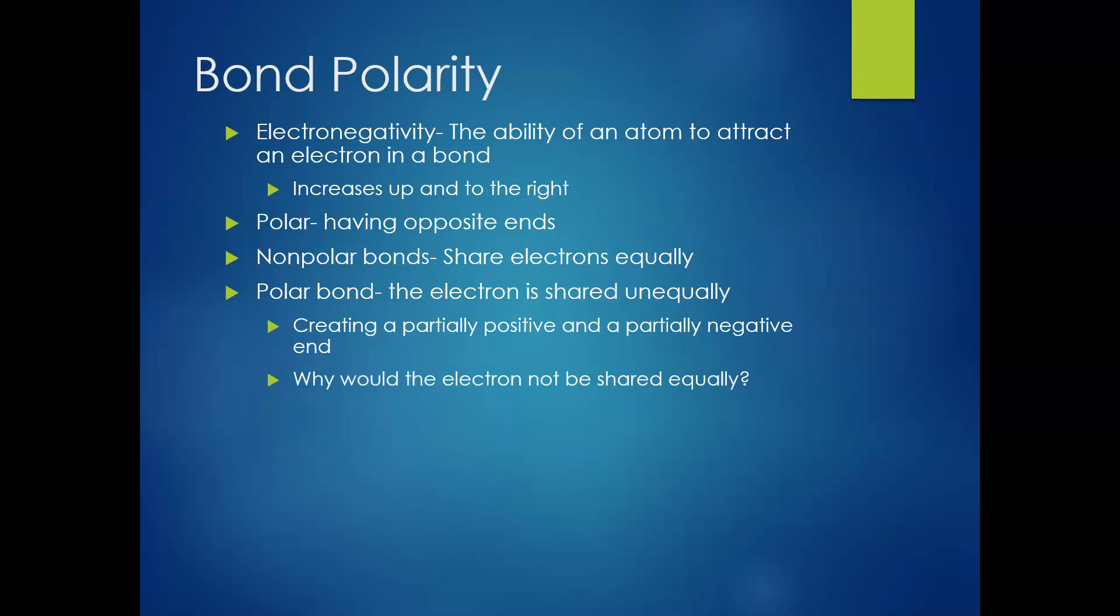So why would the electron not be shared equally? Well, different atoms have different electronegativities, so some of them have a better ability to attract electrons than others do. Also, it's a tug-of-war with the electron, so the more electronegative element is going to win. Essentially, the one with the higher electronegativity gets to be the bully. It gets to take electrons more often than it should.